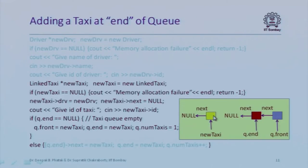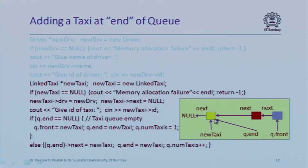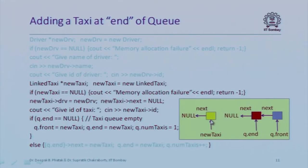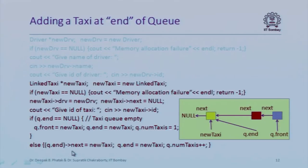To append the new taxi: the red taxi's next pointer should point to the new yellow taxi, and q.end should point to the new taxi. So q.end->next = new_taxi and q.end = new_taxi. Note the mixed operators: q.end uses dot because q is an object of type queue, but q.end is a pointer to link_taxi, so accessing its next member requires the arrow operator. Then we increment num_taxis.